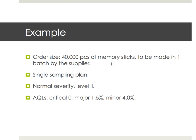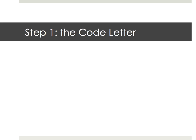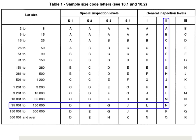The AQLs are different for each: 0, 2.5%, and 4.0% in most cases. Let's take an example: you buy 40,000 pieces of memory sticks. You follow a single sampling plan — normal severity, level 2 — and the AQLs are 0, 1.5%, and 4.0%. For major defects on electrical products and electronics, it's very often 1.5%, not 2.5%.